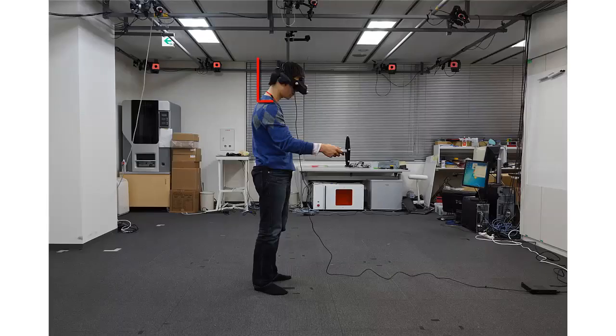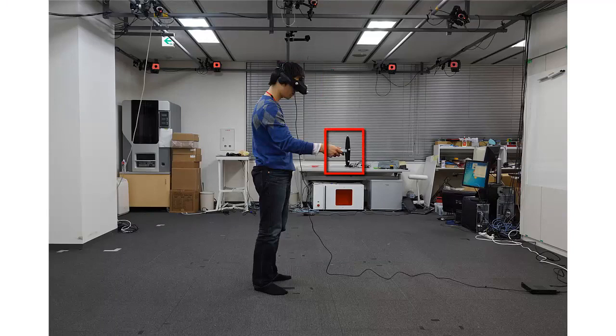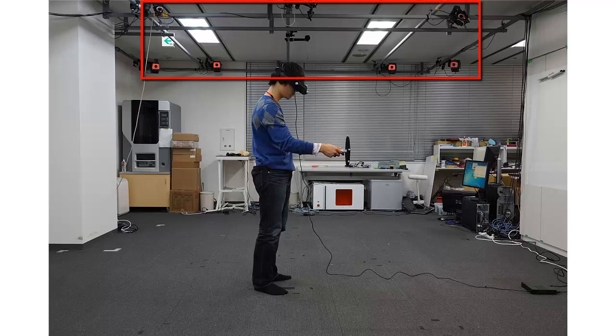Our prototype system consists of a head-mounted display, a 6 degree of freedom controller, and an optical tracking system that tracks the position and orientation of both user and controller.